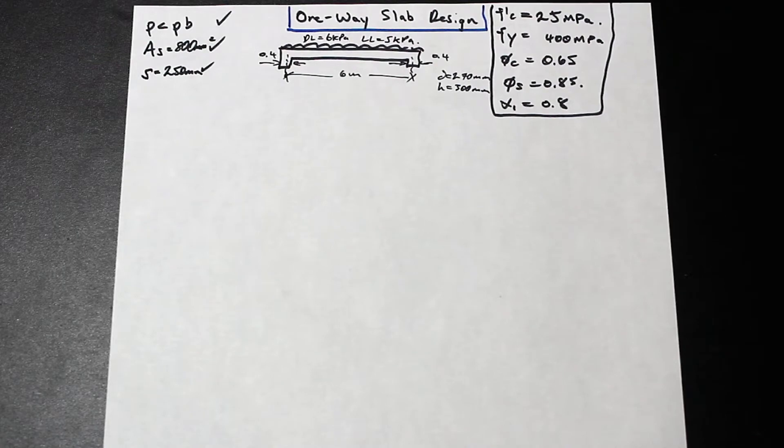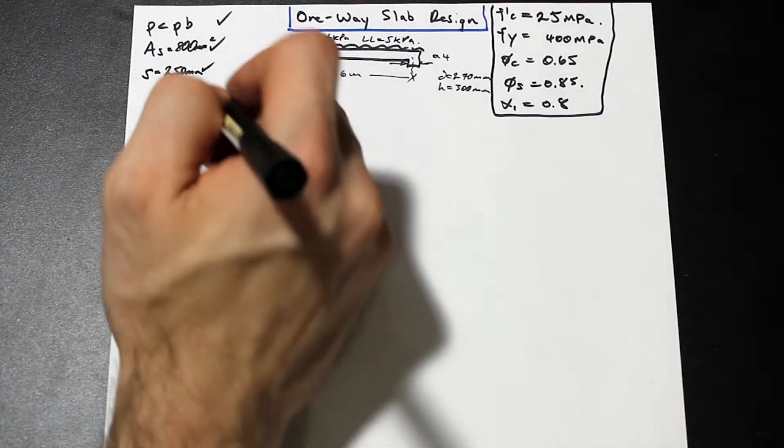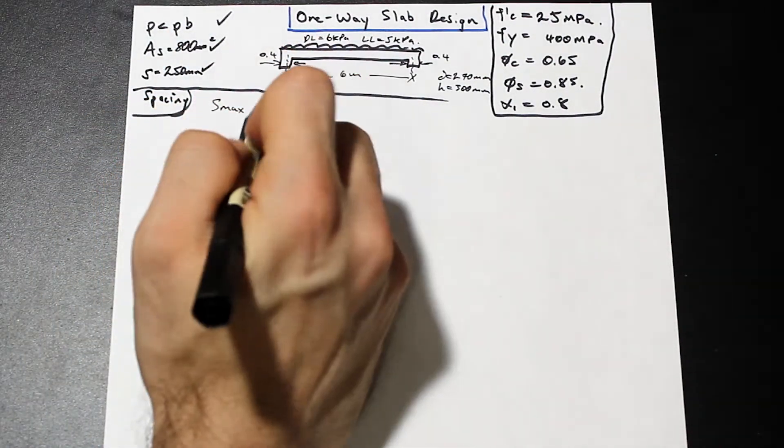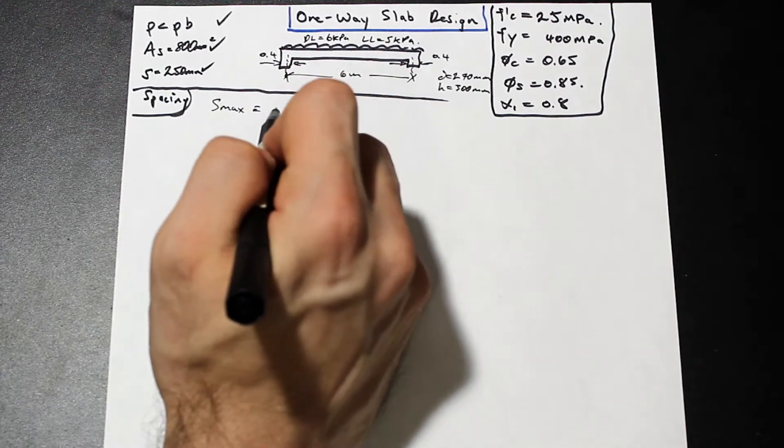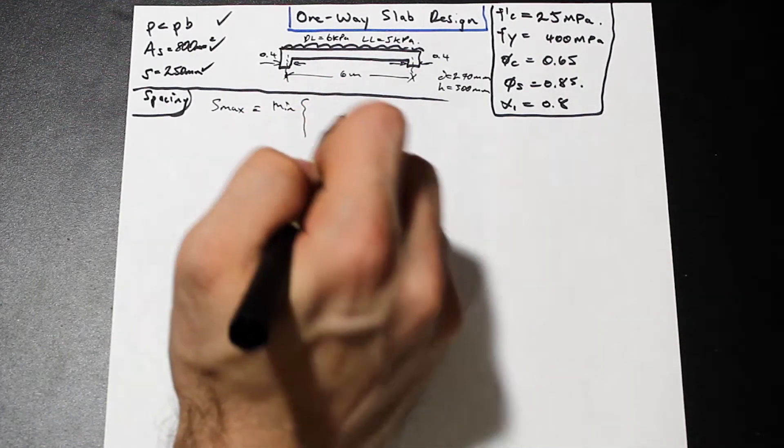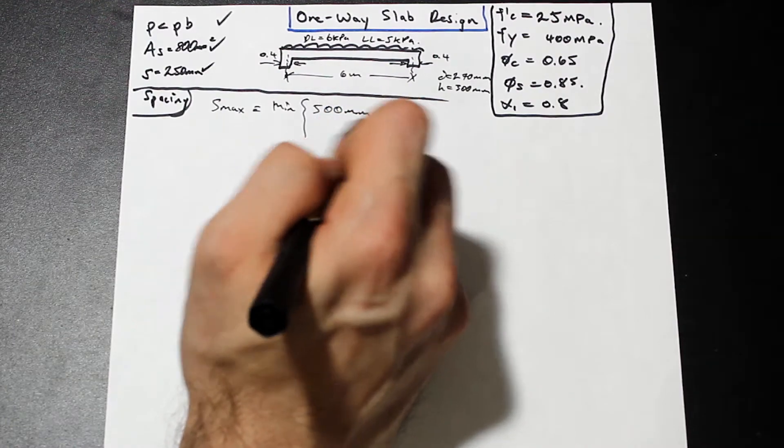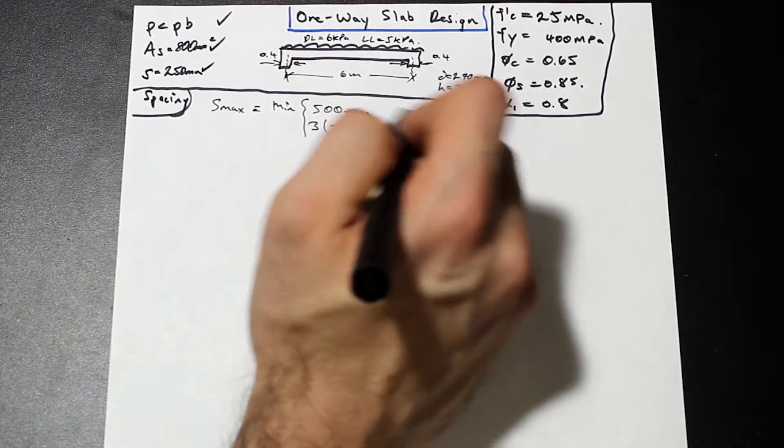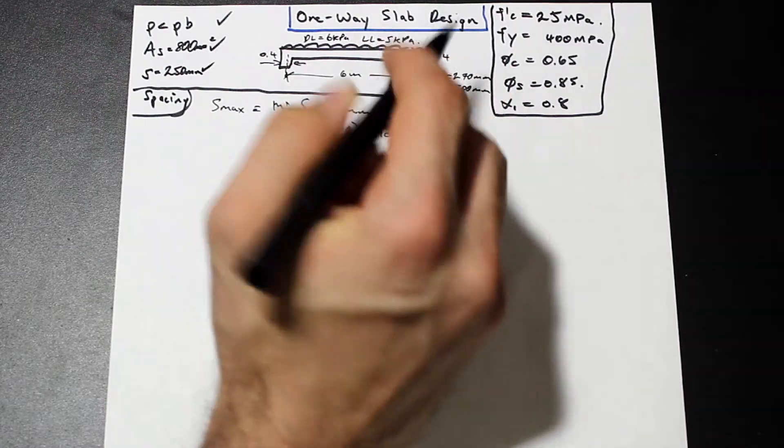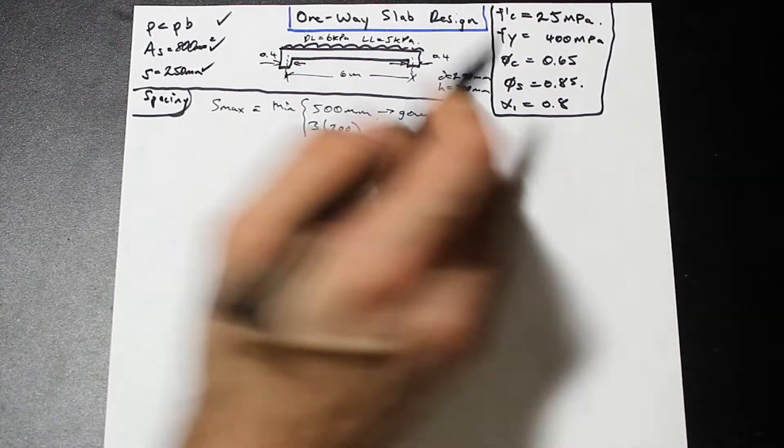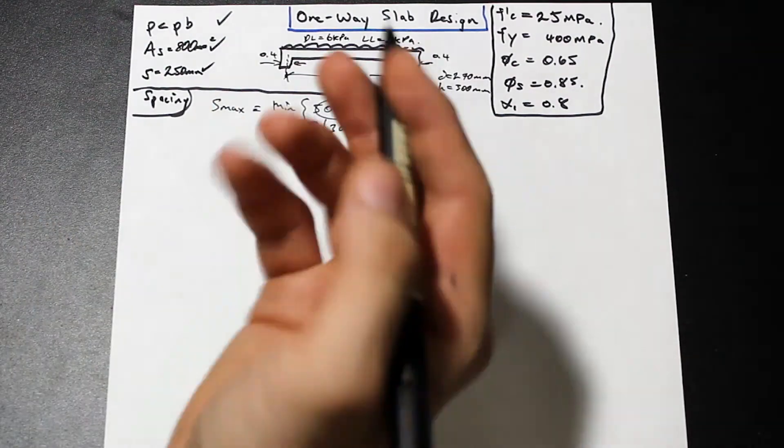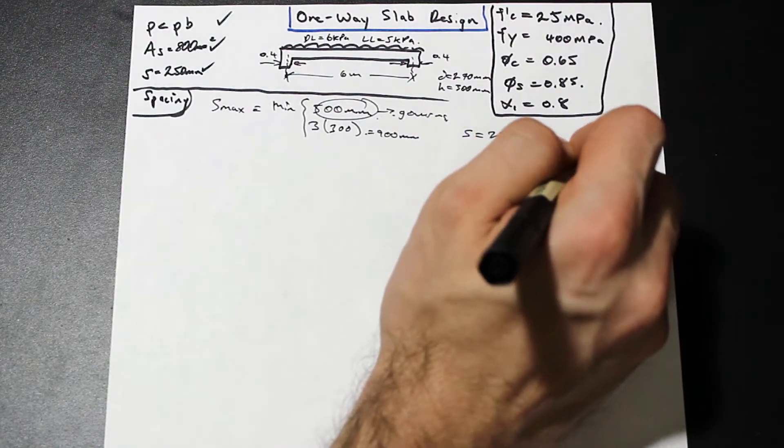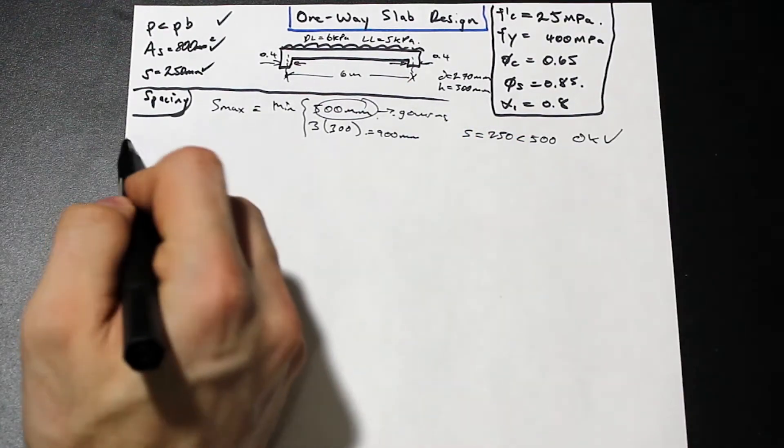According to the Canadian code for horizontal reinforcement, the maximum bar spacing S max is equal to the lesser of these two values: 500 millimeter spacing or 3 times H which is the height of the slab. In our case this is equal to 900, so the lesser is 500. As we can see from our spacing in the previous question, our spacing is equal to 250 which is less than 500, so we are okay. Our spacing is within acceptable limits according to the code.